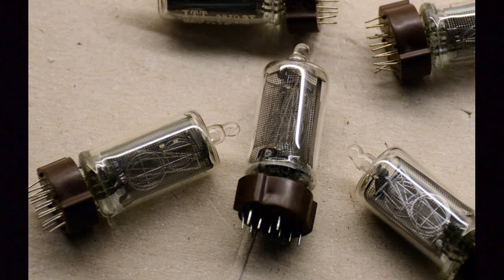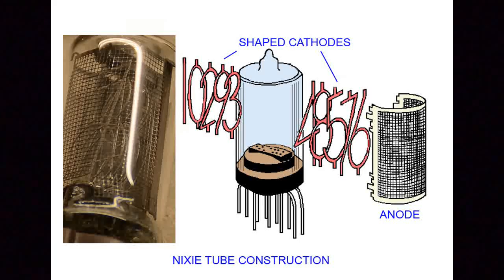Downside of using them in a project today is that they need a high voltage of well over 100 volts to function. A Nixie tube is similar in makeup to a neon bulb in that it is a cold cathode device with no separate heater like a valve or tube.